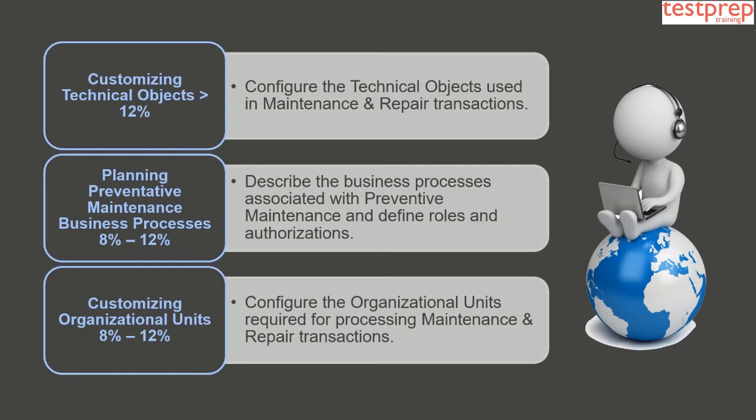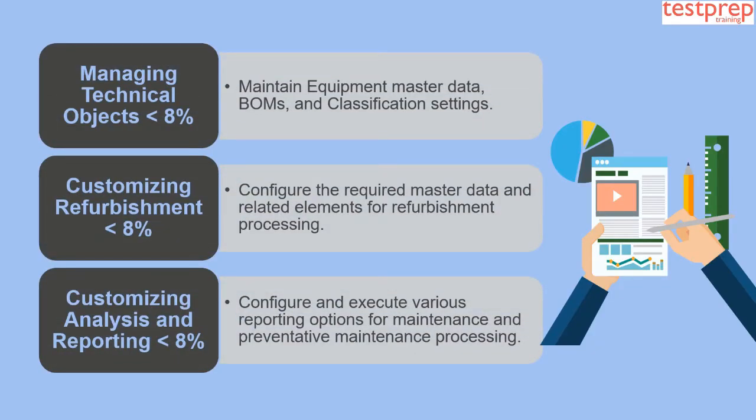Domain 5 is Planning Preventive Maintenance Business Processes, comprising 8 to 12 percent of the exam. It describes business processes associated with preventive maintenance and defines roles and authorizations. Domain 6 is Customizing Organizational Units, also 8 to 12 percent, covering configuration of organizational units required for processing maintenance and repair transactions.